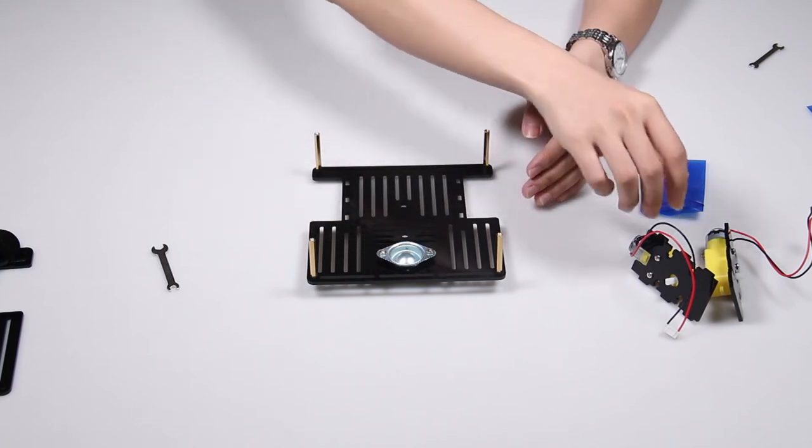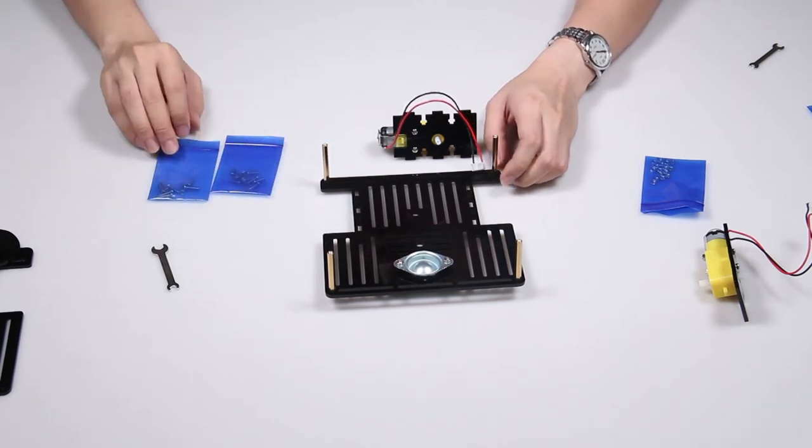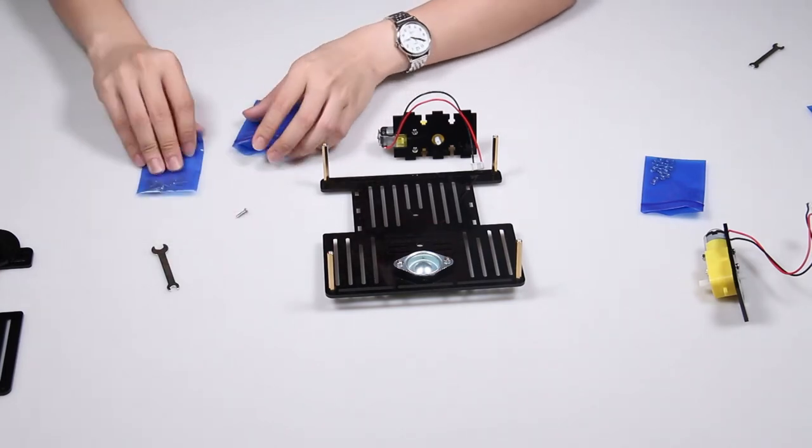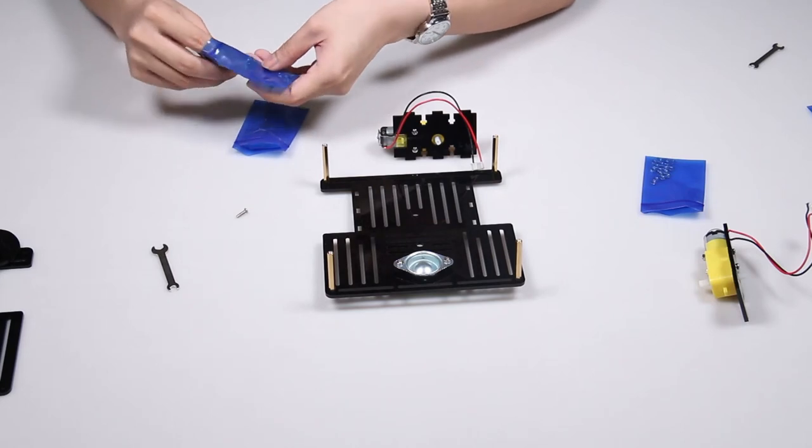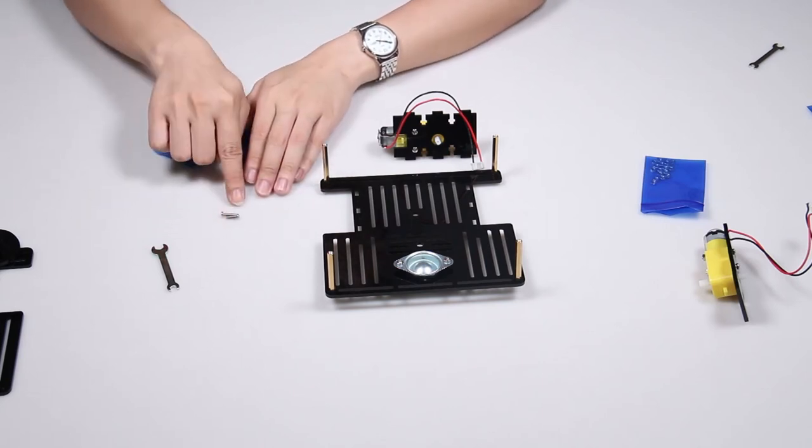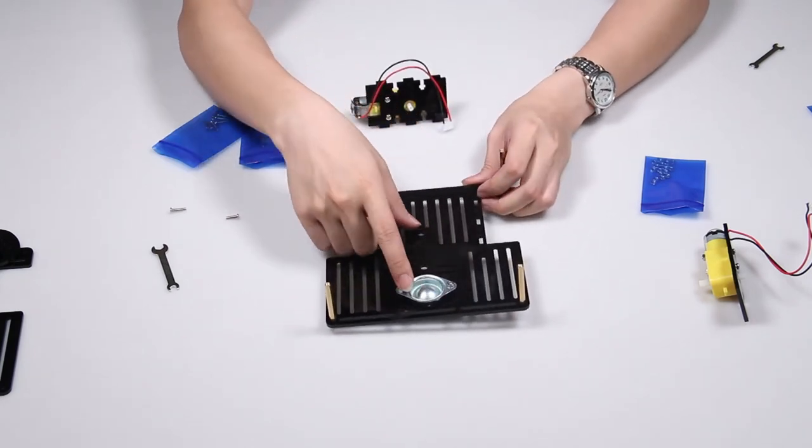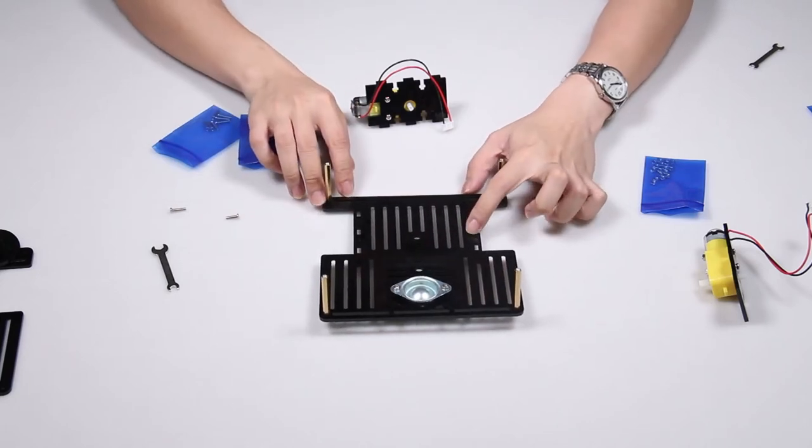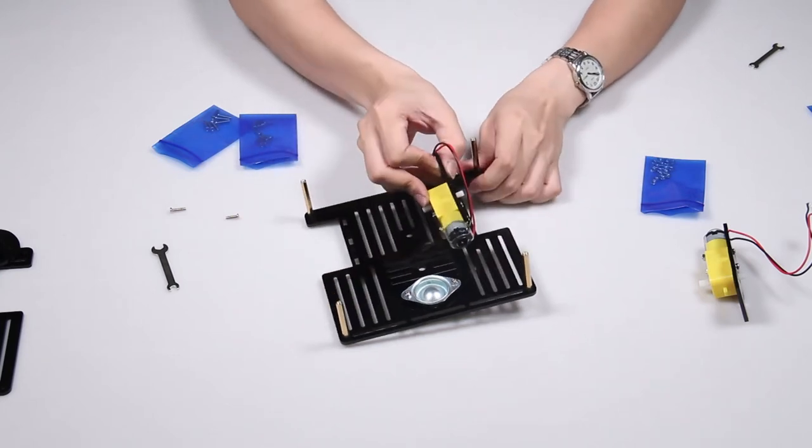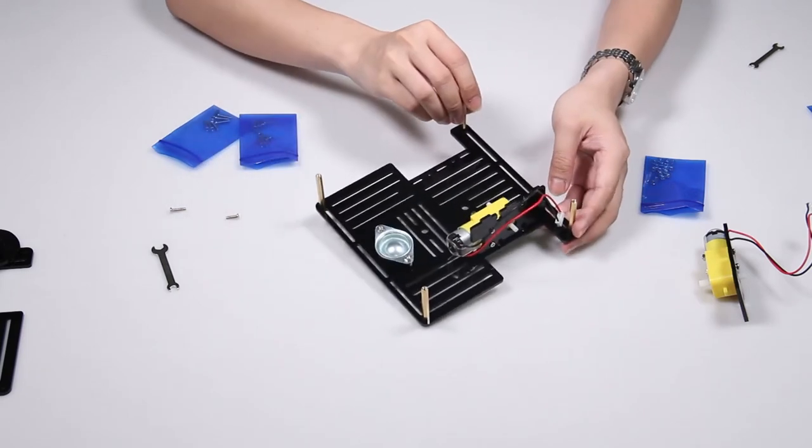Now mount the motors onto the bottom plate with M3x10 screws and M3x12 screws. You can compare them. The longest one should be 12 and the shorter one should be 10, like this. The universal wheel is the front wheel, so this should be the left wheel marked with L. It should mount like this.